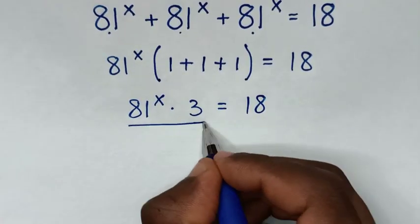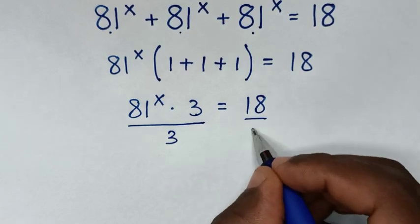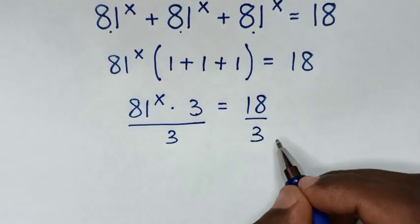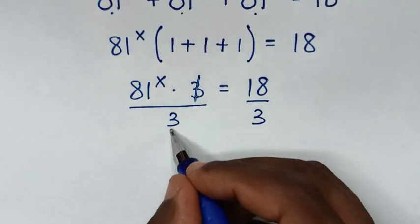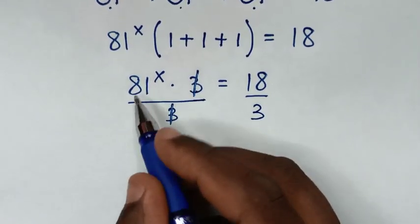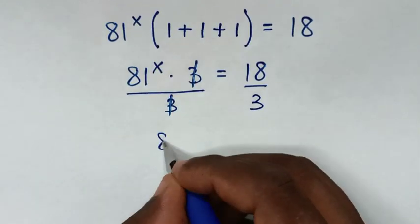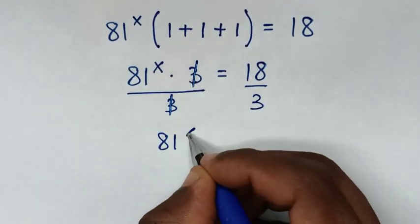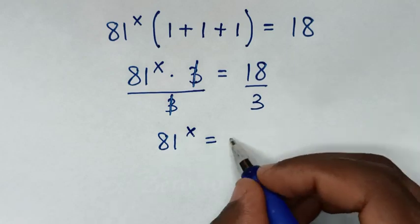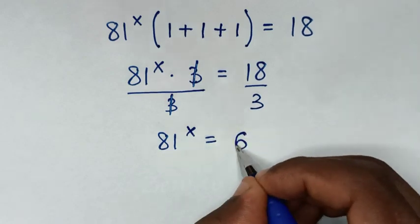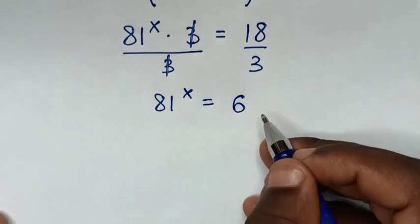Then we'll divide by 3 on both sides. So 3 and 3 will cancel, and it will be 81^x is equal to 18 divided by 3, which is 6.